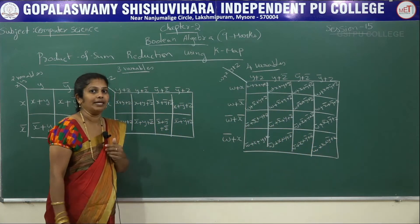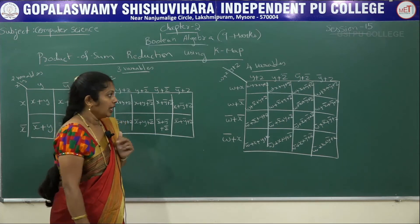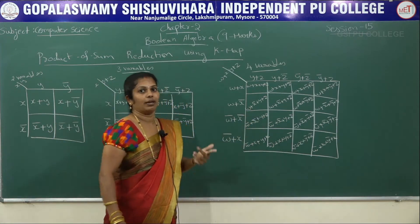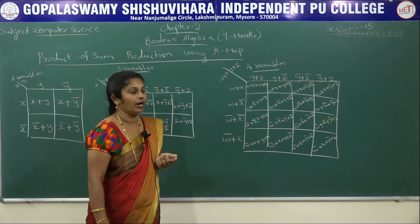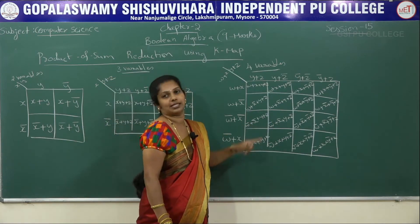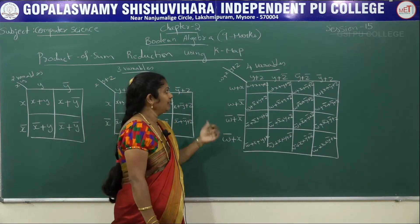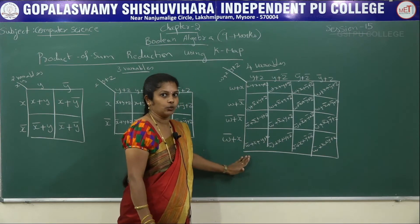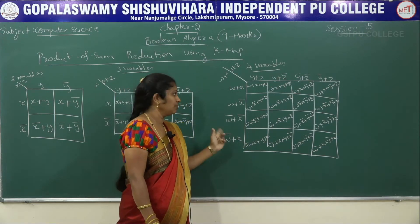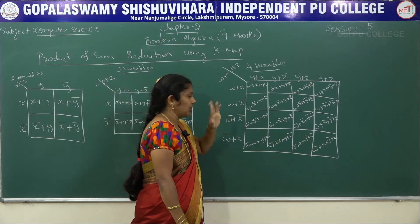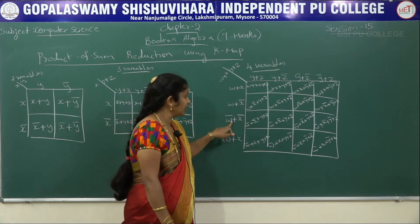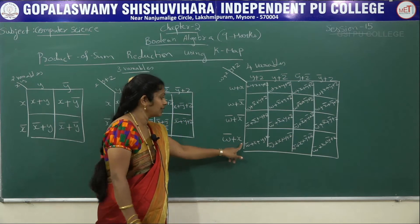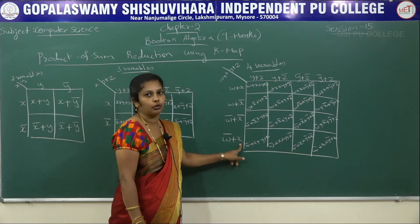What is the difference between minterm and maxterm? In minterm, we write in product format, that is dot format. Whereas in maxterm, we write plus. In minterm, for the first three we write bar and for the last one also bar. Whereas in maxterm, for the first three we do not put any bar, for the next four we put bar, and for the last one don't put any bar.